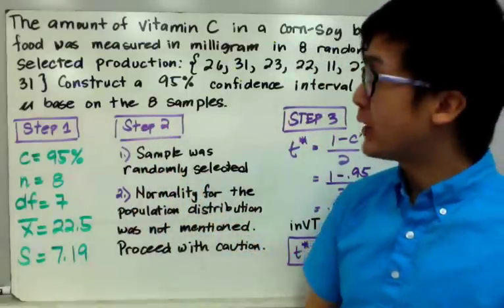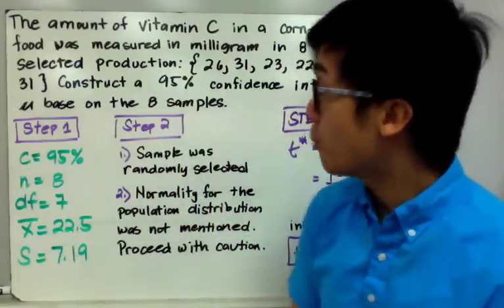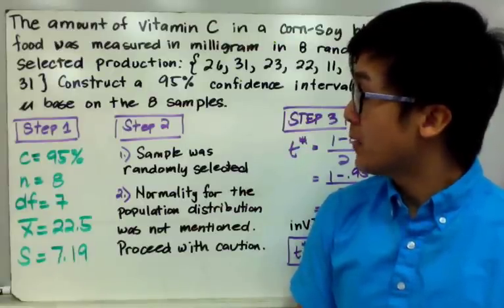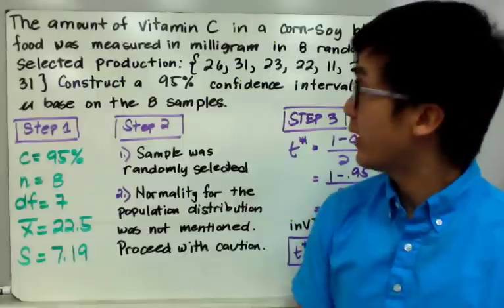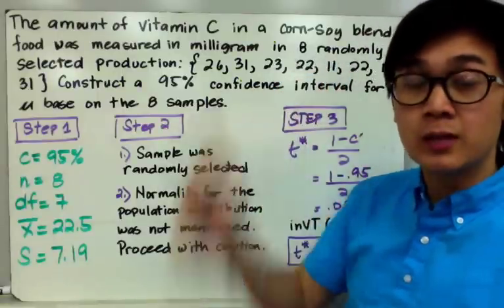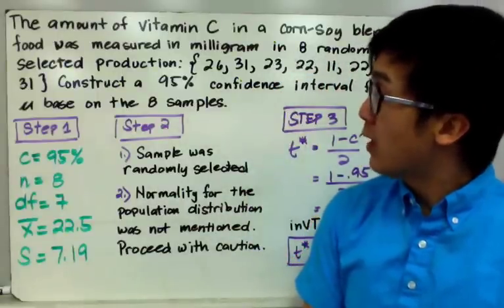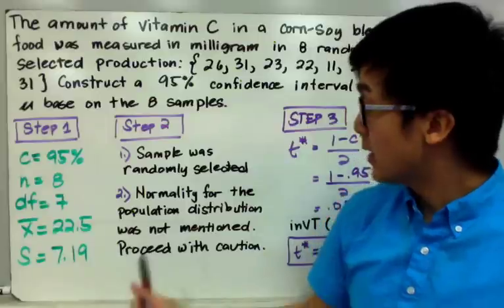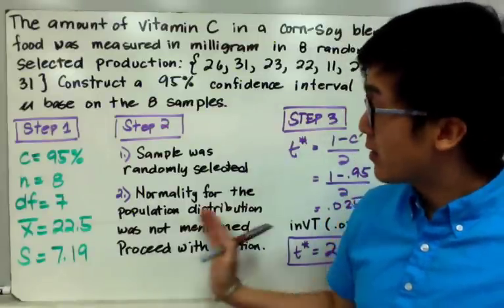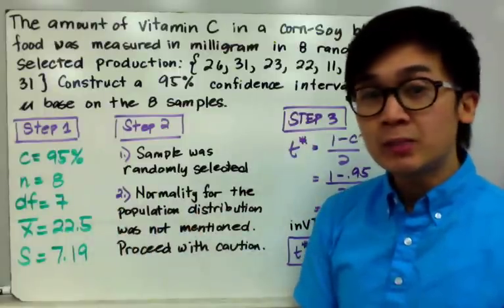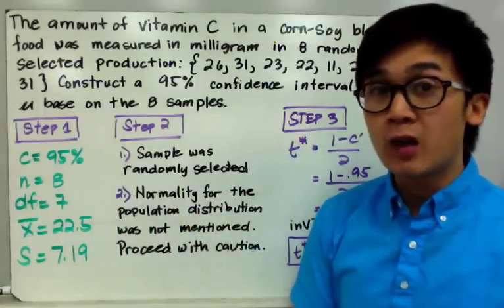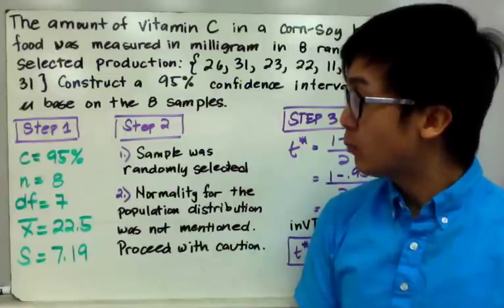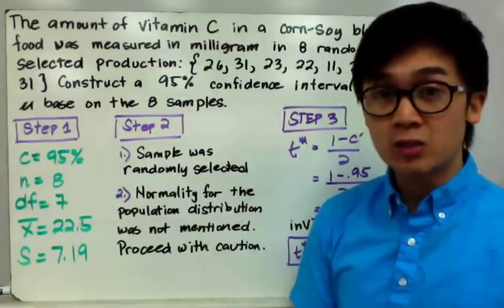For step 2, we verify our conditions. The sample is randomly selected, as stated in the problem, so that condition is satisfied. However, normality of the population distribution is not stated in this problem. We proceed with caution because this condition is not satisfied — it doesn't mean we can't compute the confidence interval, but we must note that normality was not satisfied.